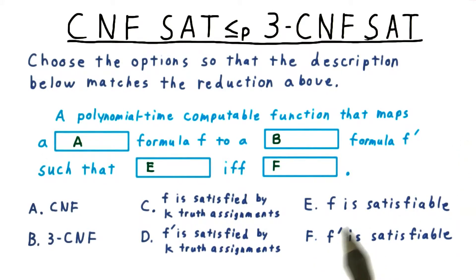The first part of the answer is that we're trying to map a CNF formula into a 3CNF one. We're trying to show that 3CNF is as hard as CNF, so that if we could solve 3CNF, we would solve CNF as well.